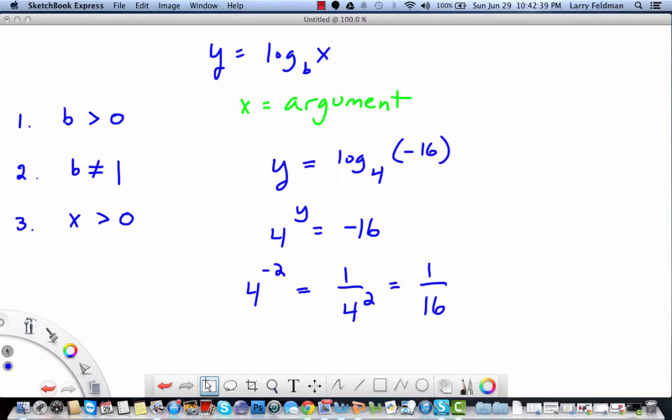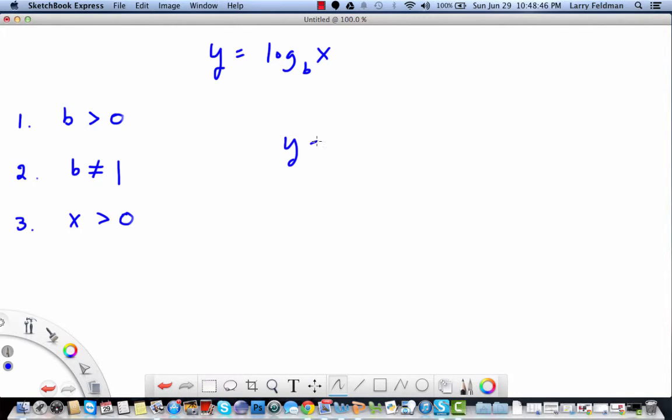Now, just for food for thought, y equals log base negative 2 of negative 2. It will probably start an interesting discussion and might even earn you some extra credit, because negative 2 to the y equals negative 2, which leaves y equals 1 as a solution. Now, this looks like a perfectly valid problem even though we have violated rule number 1 and rule number 3. And I will indicate the violations with these scary red X's.